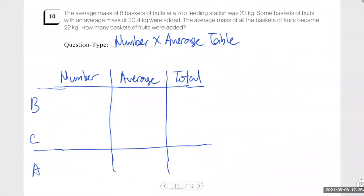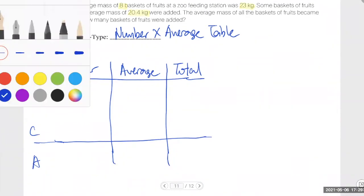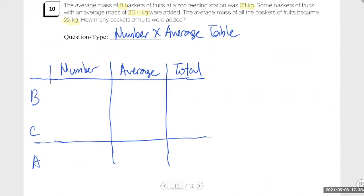If you don't know how to do this, this would be a good guiding, good starting point. Where should I put eight baskets first? Under where? Number. Number of what, B, C, or A? B.